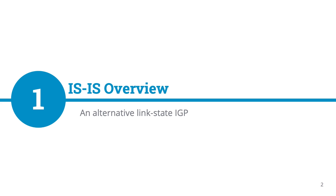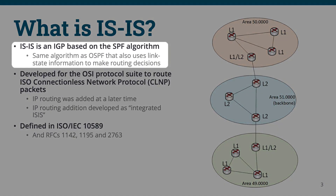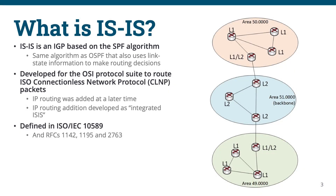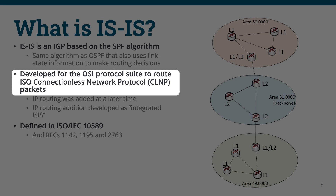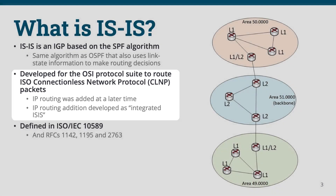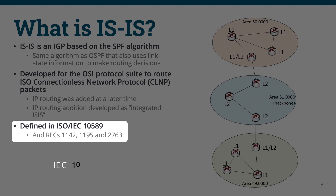Let's take a look at what exactly ISIS is. ISIS is an interior gateway protocol based on the SPF algorithm, which is the same algorithm used by OSPF to use link-state information to inform routing decisions. A primary difference between OSPF and ISIS is that ISIS was developed for use with the OSI protocol suite to route ISO CLNP packets, rather than IP packets. In 1990, ISIS was extended to support IPv4 packet routing, and this revision was called Integrated ISIS. Being that ISIS was not initially developed by the IETF, it was not first published as an RFC, but rather as an ISO-IEC standard 10589. Later revisions were published as RFCs shown here.